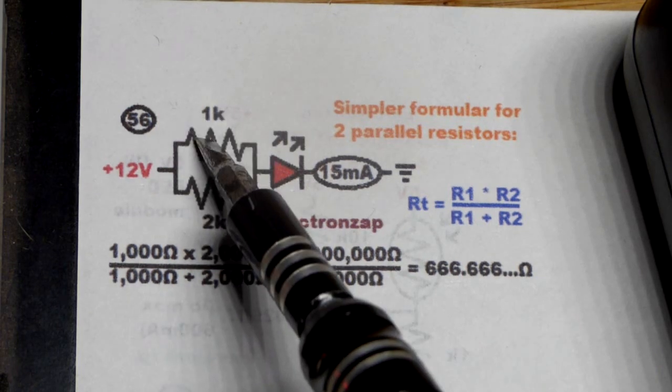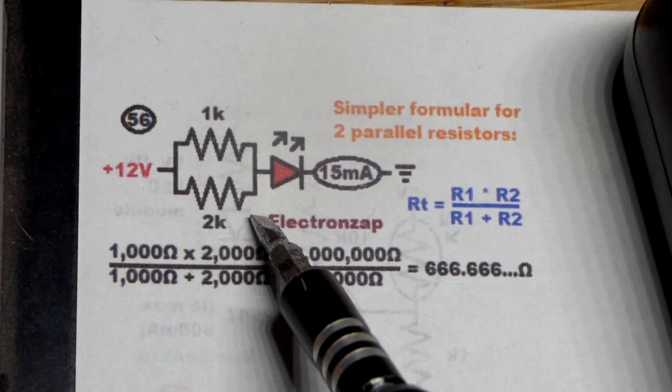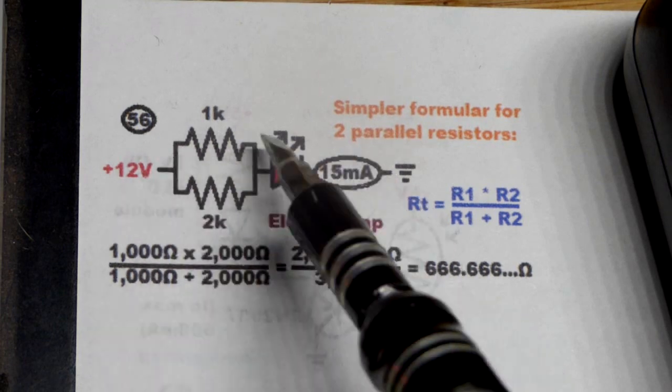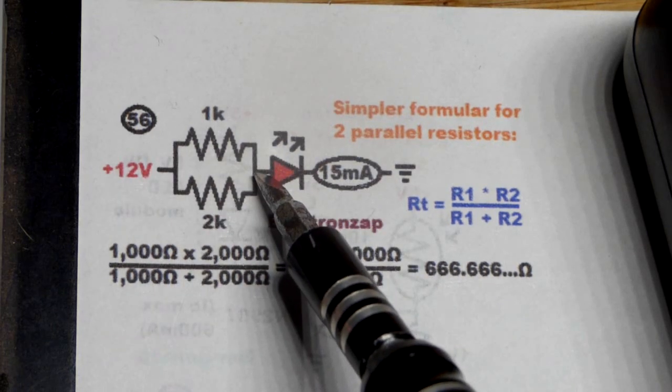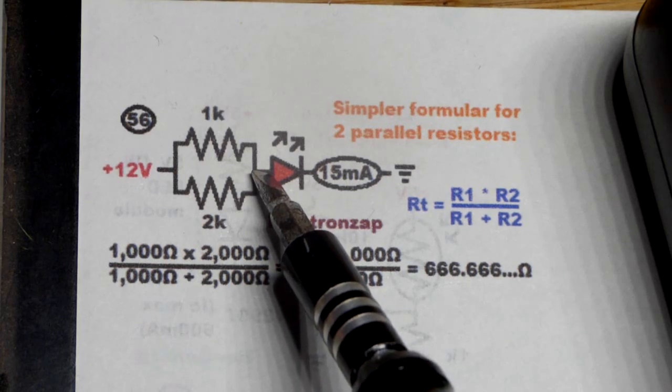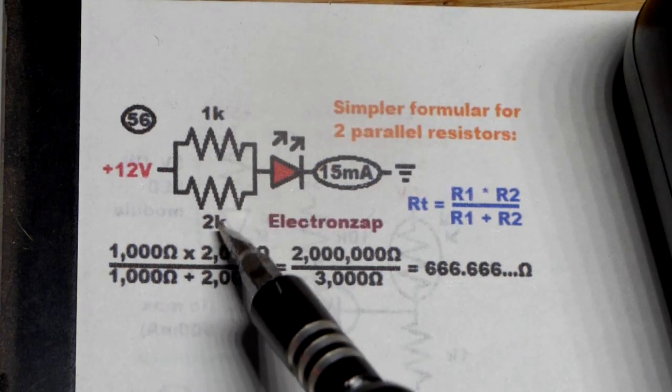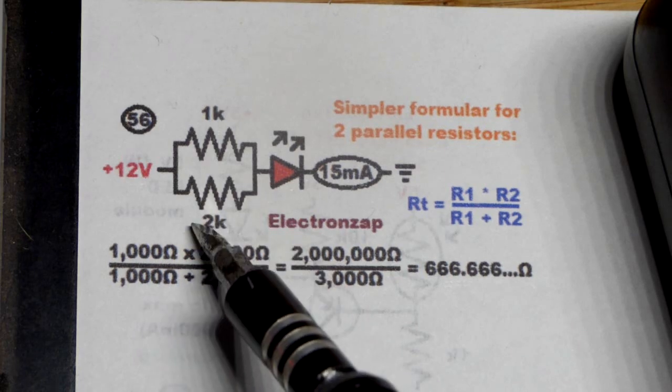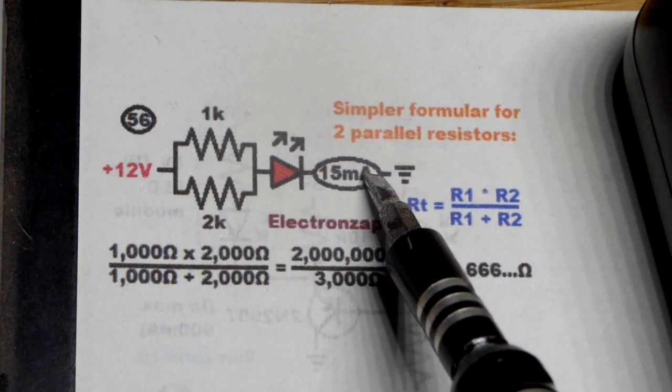But in this case, as I said before, if we have a 1K up there and a 1K down there, we'll get twice the current. Each one is going to pass the same amount of current. So it's pretty simple. You just take 1 divided by the number of resistors if they are equal value. So 1 divided by 2 would be 1 half the resistance. You get twice the current.